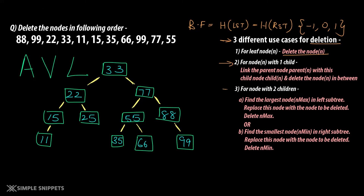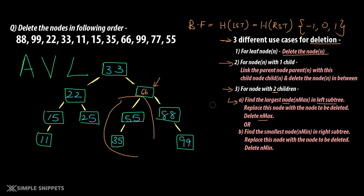The third case is a little tricky — for a node with two children. Let's say you want to delete 77. You go to the left subtree of 77 and find the largest node, which is 66 — that is nmax. Then you replace 77 with 66 and delete nmax (the original 66 node). The reason for this process is to maintain the binary search tree rule: for any node, the left side has smaller values and the right side has greater values.